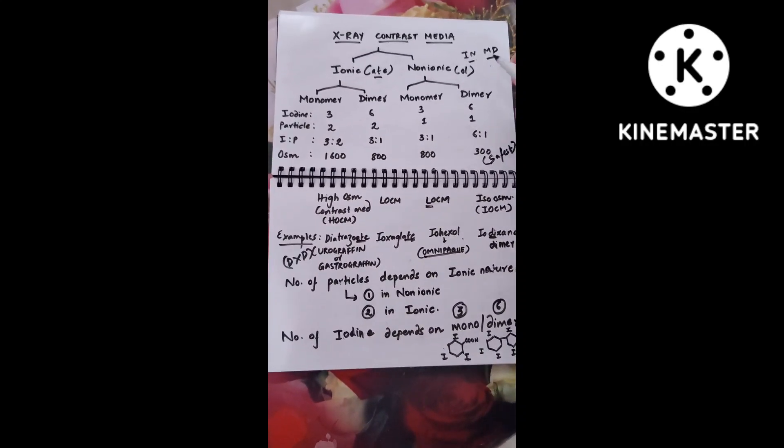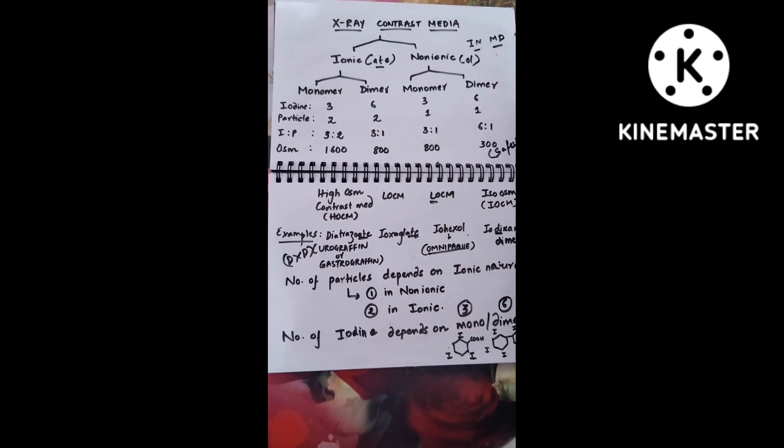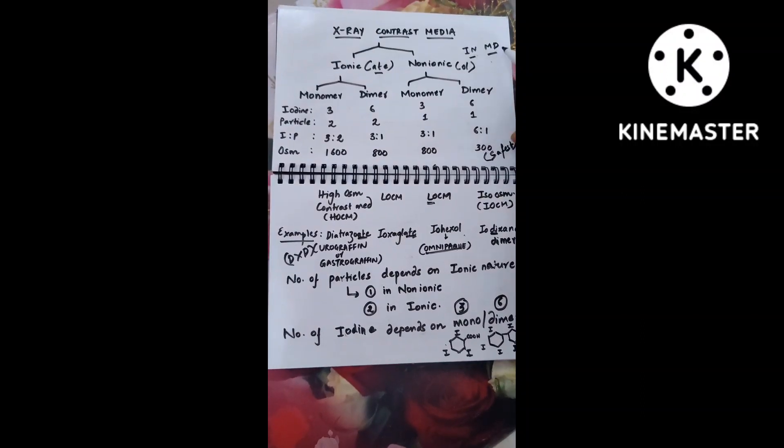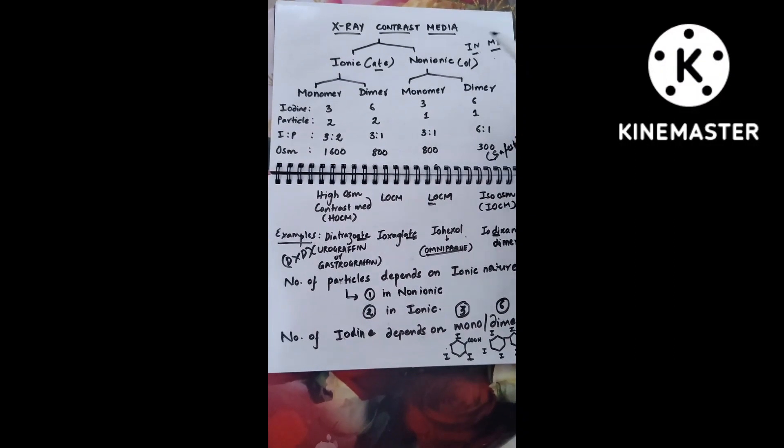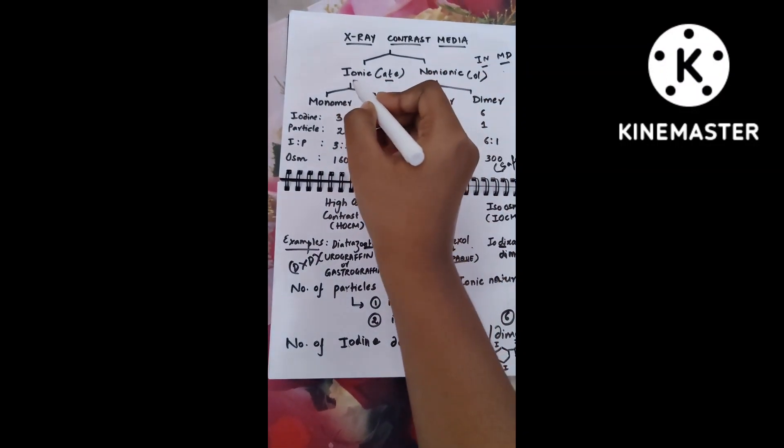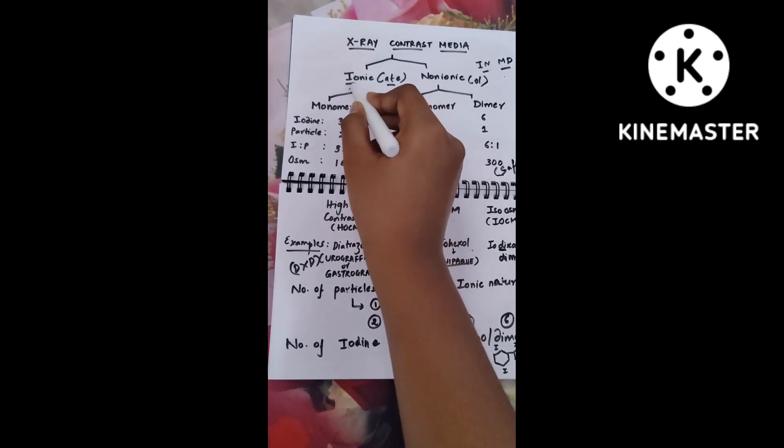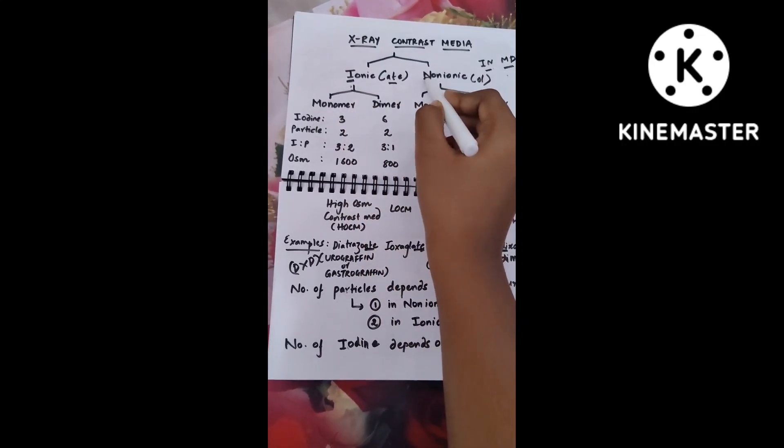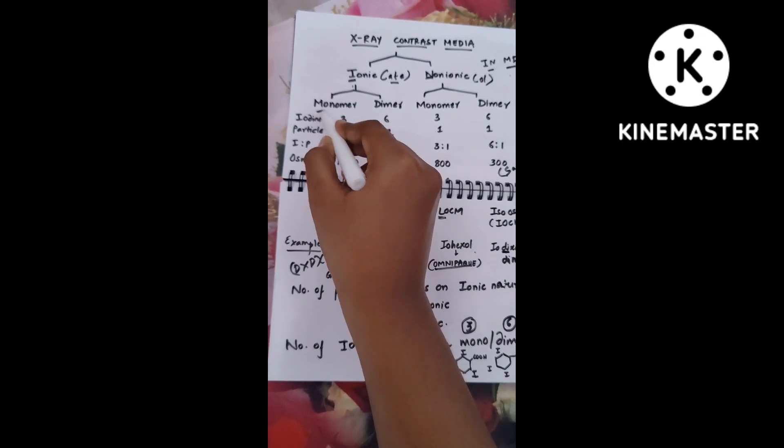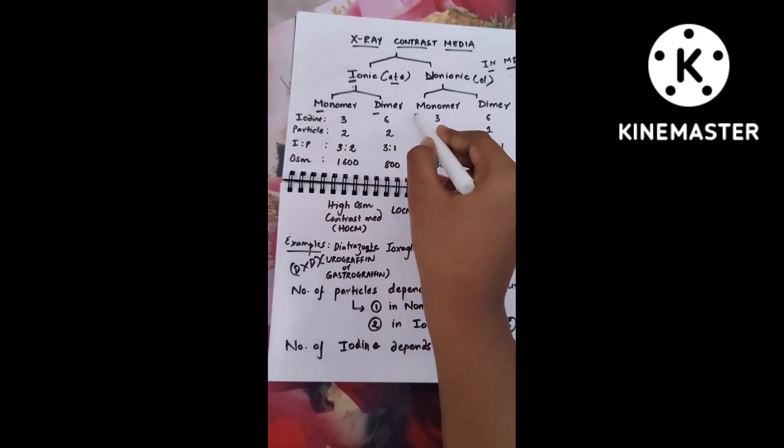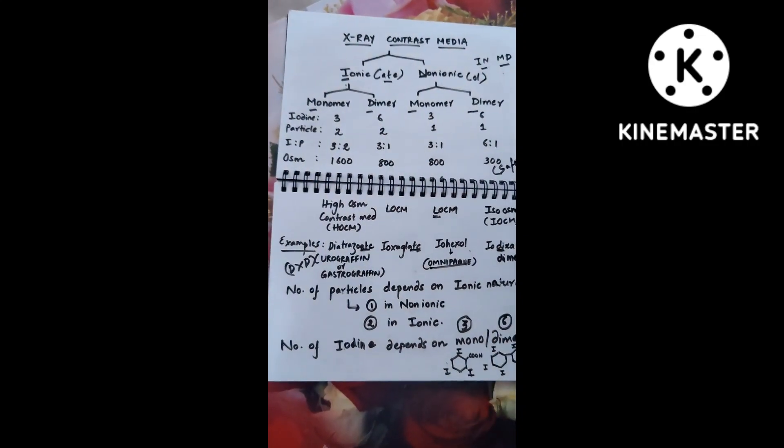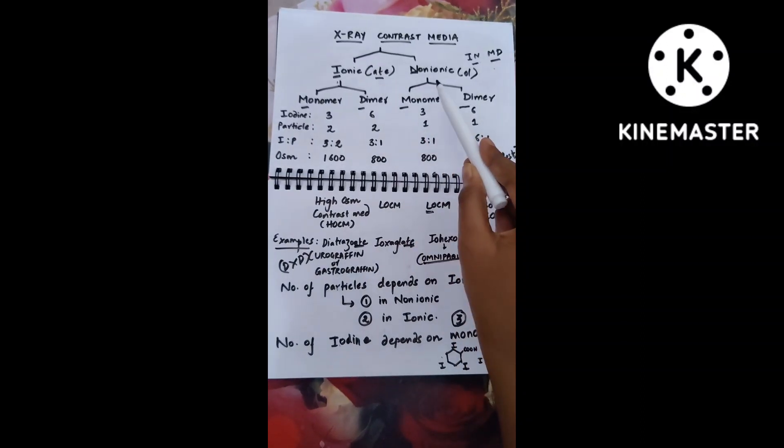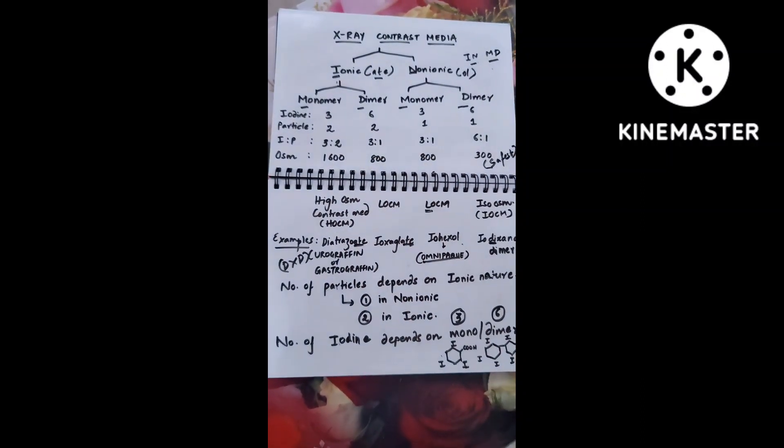You're going through all this struggle, remembering all the names and reading so many topics to get into MD, to get into residency. The mnemonic here is INMD - that is, I is ionic, N is non-ionic, M is monomer, D is dimer.